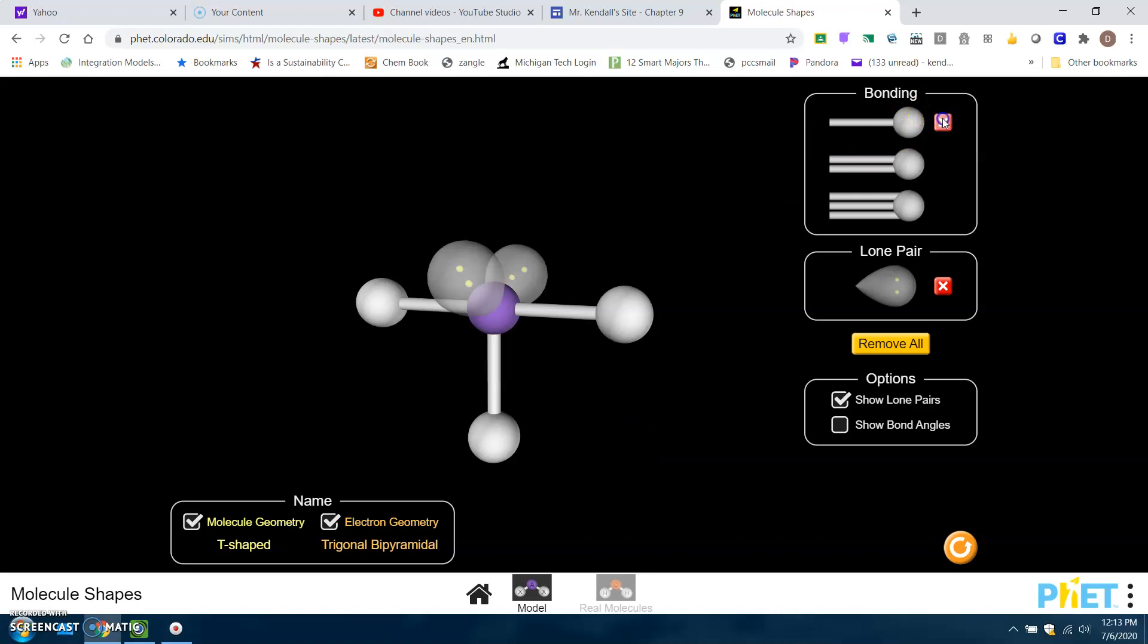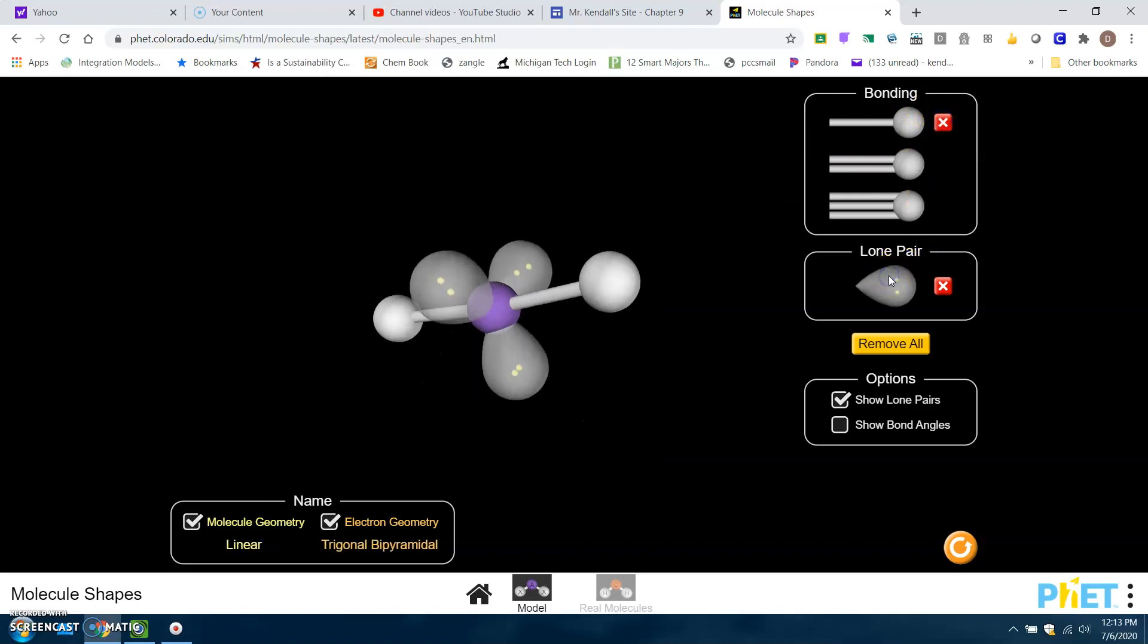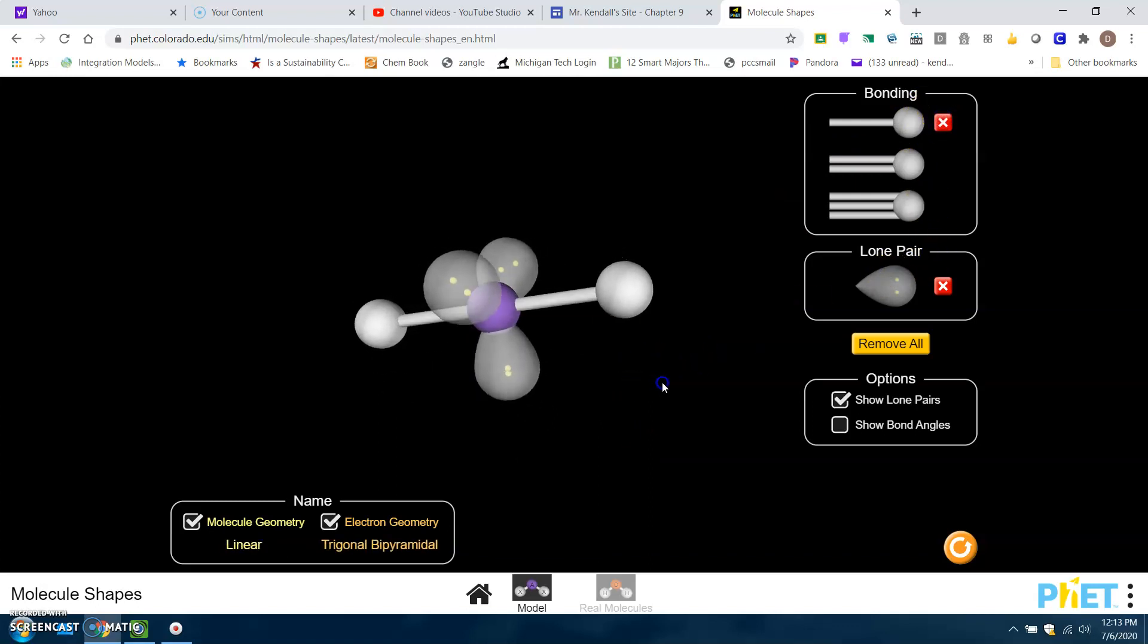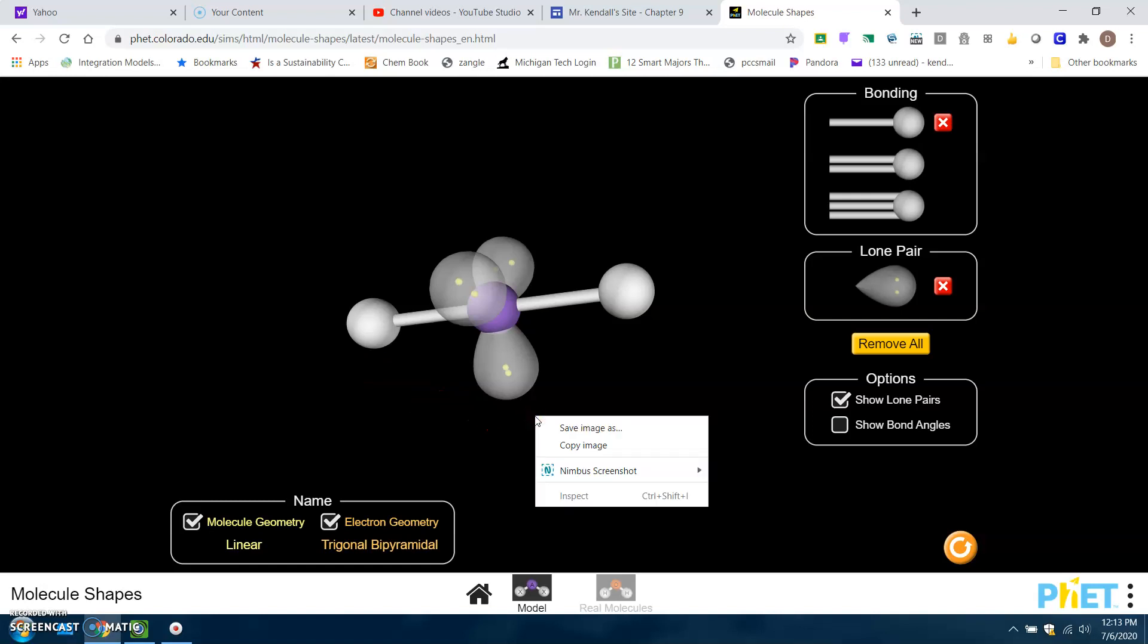And then we can do this one more time, and it goes linear. So the electrons, the lone pairs, they take in the central plane, separating each other as much as they possibly can. So there's three of them. And it's like trigonal planar for those three guys. And then they force the bonded pairs as far apart as they can. So those guys are separated out that way.